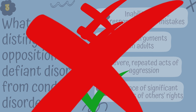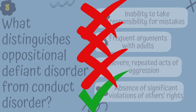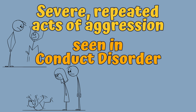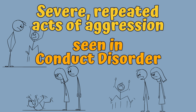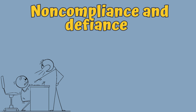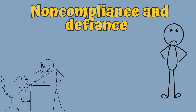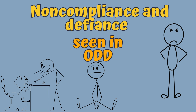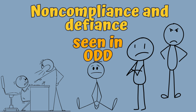Option C, Severe, repeated acts of aggression, is more characteristic of conduct disorder than ODD. Conduct disorder often involves more severe, persistent aggression, including physical harm to others, whereas ODD typically manifests as noncompliance and defiance rather than severe aggression.